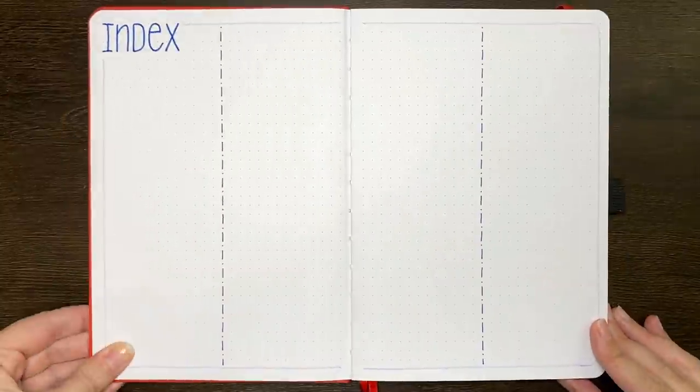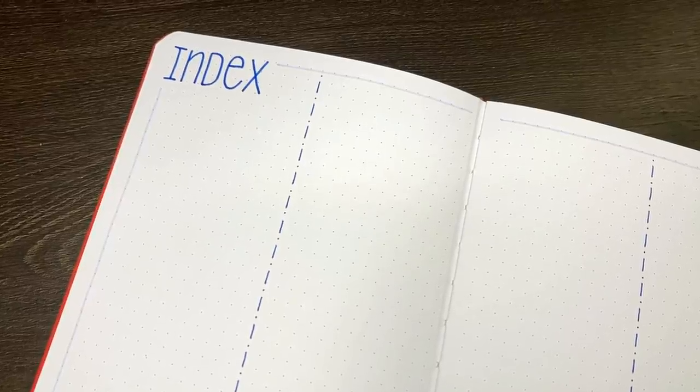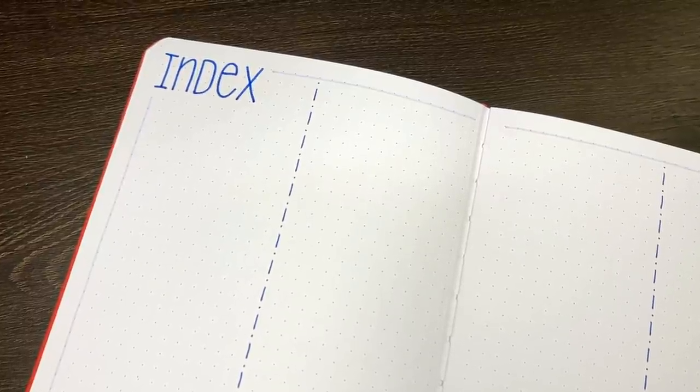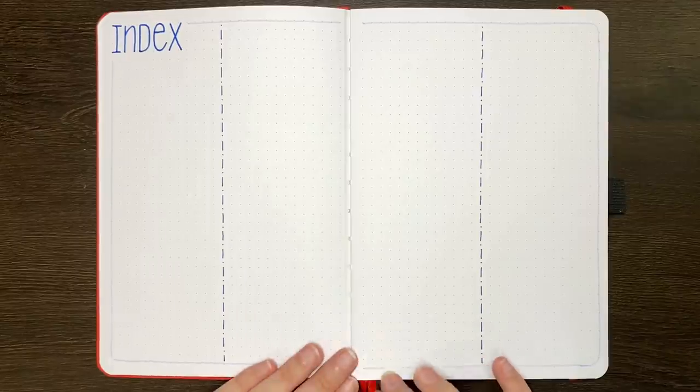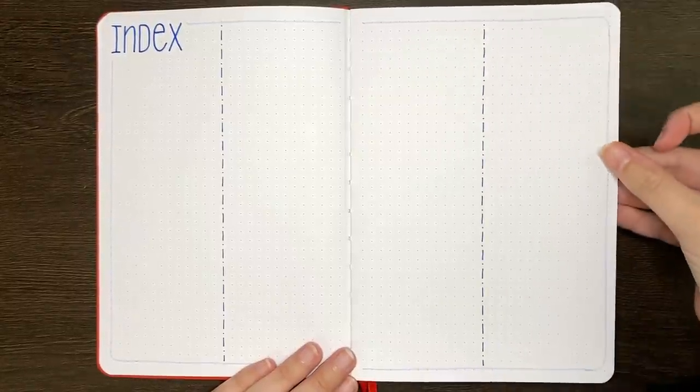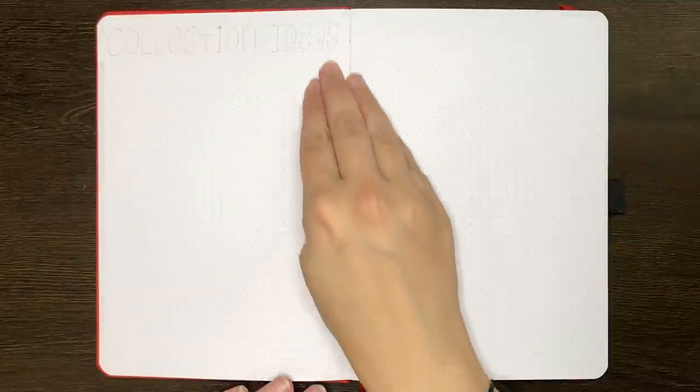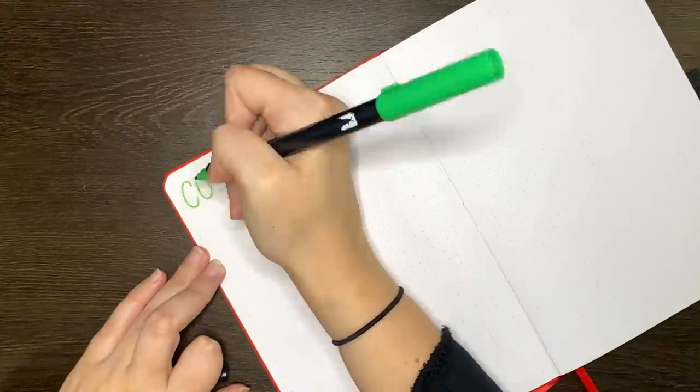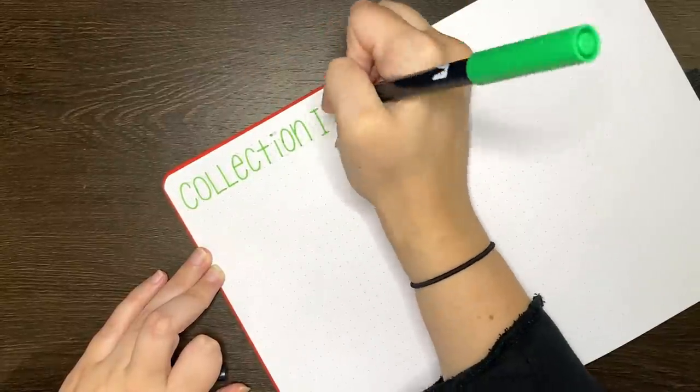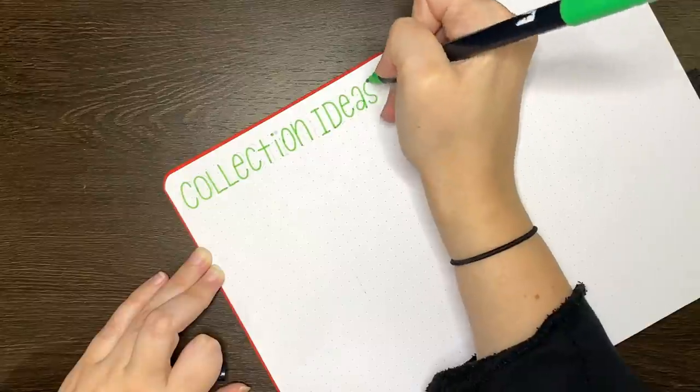In this journal though, the collections that I'm going to be adding will essentially be added whenever I feel like making them, so no real rhyme or reason as to the order that they go in, with the exception of my swatch pages, which will all be at the back. Of course, the Archer and Olive doesn't have numbered pages, so I will be adding those in myself, but I'm going to be adding those as I go, rather than all at once, just in case I have to stick pages together at any point, or something like that.